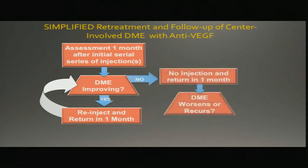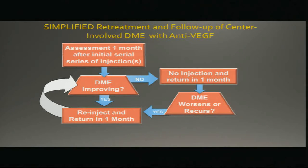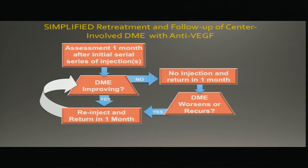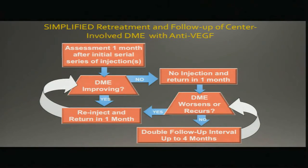Something that not a lot of us really know is when to start and when to stop. This is a simplified DRCR network protocol: if you have improvement, you continue injecting after a month and watch; if you do not have improvement, you withhold for a month. If you have improvement you continue injecting; if you do not, you wait and observe for a month. If there is still no improvement, you can double the follow-up period. You have to decide whether vision improves to 6/6, or there is no further improvement on OCT, or it is worsening.